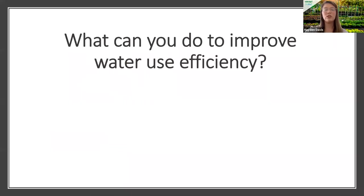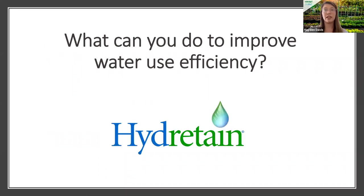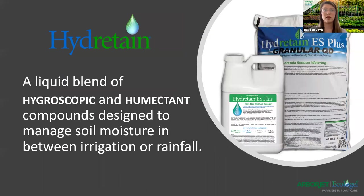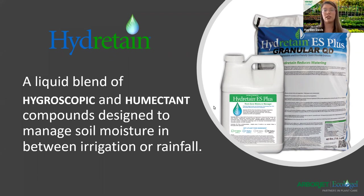So what can you do to improve water use efficiency? Here at Arbor Jet and Ecologel, we suggest Hydrotain. Hydrotain is a liquid blend of hygroscopic and humectant compounds designed to manage soil moisture in between irrigation or rainfall, using its unique technology.